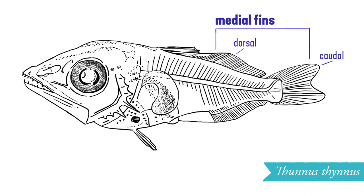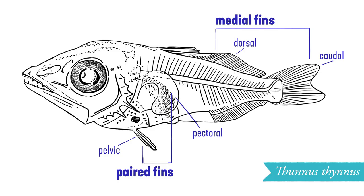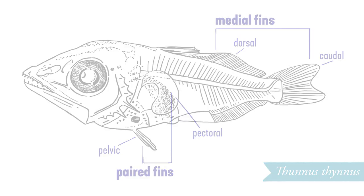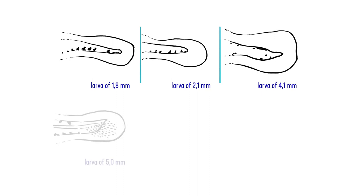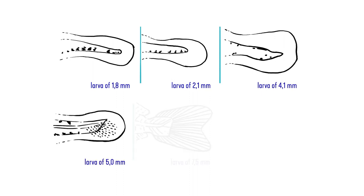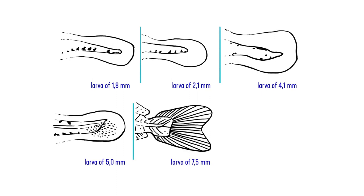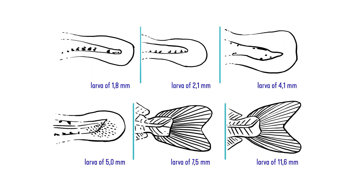Dorsal and caudal are the medial fins; pectoral and pelvics are the paired. Different fins form in different ways — the timing and manner of development is taxon-specific. It's around the time that the caudal fin becomes fully formed that the larvae begin picking up meaningful swimming abilities.